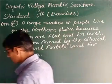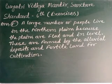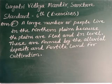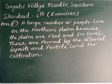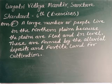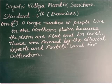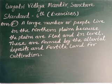Question F: why do a large number of people live in the Northern Plains? We discussed on page number 51 that the Northern Indian Plains lie to the south of the Himalayas. They are generally level and flat, formed by the alluvial deposits laid down by the rivers Indus, Ganga, Brahmaputra and their tributaries. These river plains provide fertile land for cultivation, which is the reason for the high concentration of population.